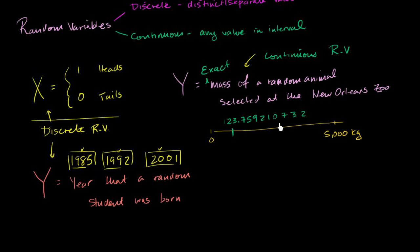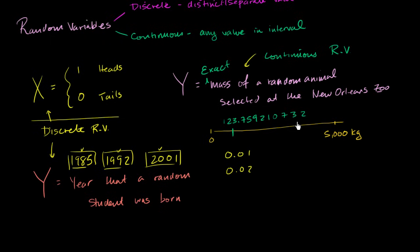Notice that in the zoo scenario, you could not list all of the possible masses — you could not even count them. You might try: OK, maybe 0.01, maybe 0.02. But you'd have just skipped an infinite number of values, because it could have taken on 0.011, 0.012, and between those there's still an infinite number of values. There's no way to count the values a continuous random variable can take on. With a discrete random variable, you can count and list the values.